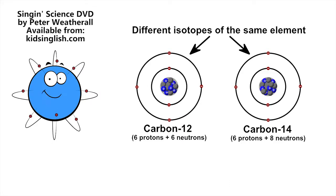Atoms with the same number of protons in their nucleus but different numbers of neutrons are said to be different isotopes of the same element.